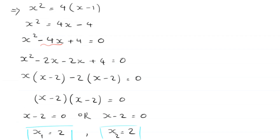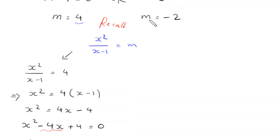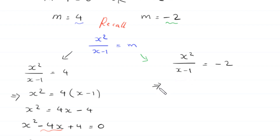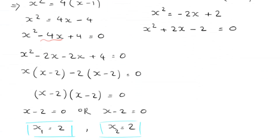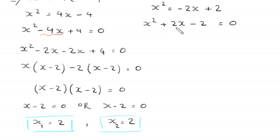To find the other two solutions, we substitute m equals negative 2: x squared over (x minus 1) equals negative 2. Multiplying both sides by (x minus 1): x squared equals negative 2(x minus 1), which expands to x squared equals negative 2x plus 2. Moving terms to the left gives x squared plus 2x minus 2 equals 0. This quadratic is not factorable, so we solve it by the quadratic formula.